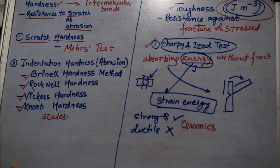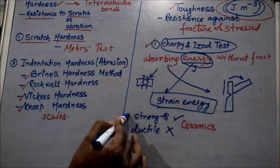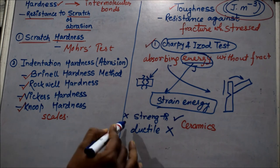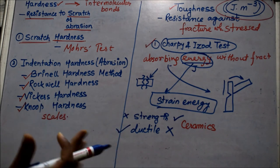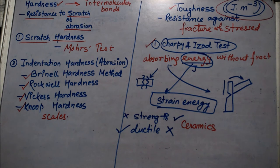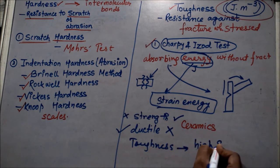The opposite to that is also true. If some material is lacking in strength but is ductile, then also it will not be considered as tough. To be tough, the material should be able to withstand high stress and high strains. So toughness comes with high value of stress and high value of strain. Both these things should be high.